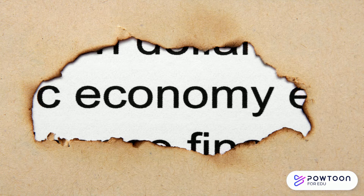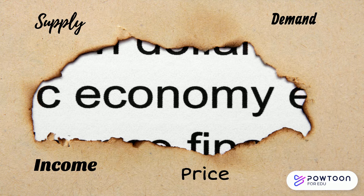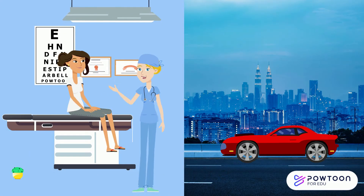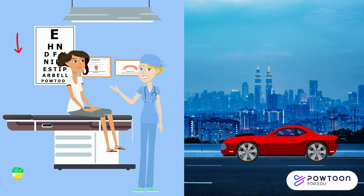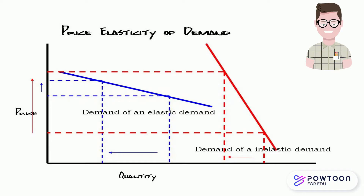In economics, elasticity generally refers to variables such as supply, demand, income, and price. It seems reasonable to expect, for example, that a 10% change in the price charged for a visit to the doctor would yield a different percentage change in quantity demanded than a 10% change in the price of a Ford Mustang. To show how responsive quantity demanded is to a change in price, we apply the concept of elasticity — the price elasticity of demand for a good or service.